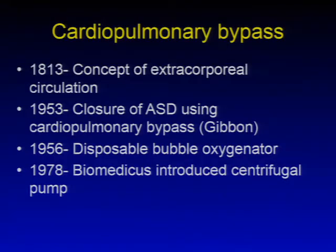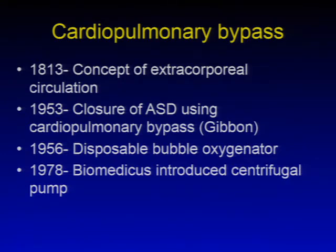Cardiac anesthesia is not complete without talking about cardiopulmonary bypass. The concept started in 1813 and the first use of cardiopulmonary bypass was in 1953, when it was used for closure of atrial septal defect by Gibbon. Gradually, the disposable bubble oxygenator and biomedical centrifugal pumps were introduced. Nowadays, state-of-the-art CPB machines are used in most hospitals for cardiac operations.